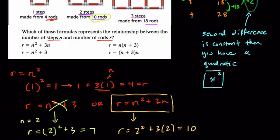And this formula is applied to the last case when n equals three. We should get 18. So r equals what? n squared, so three squared, plus three times n or three times three. So nine plus nine. r equals 18. So this is our working formula.